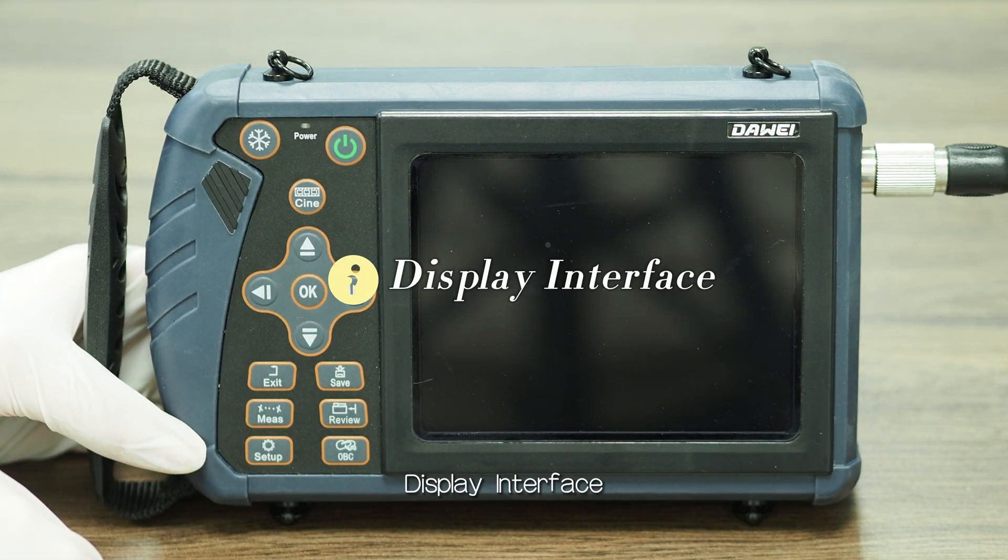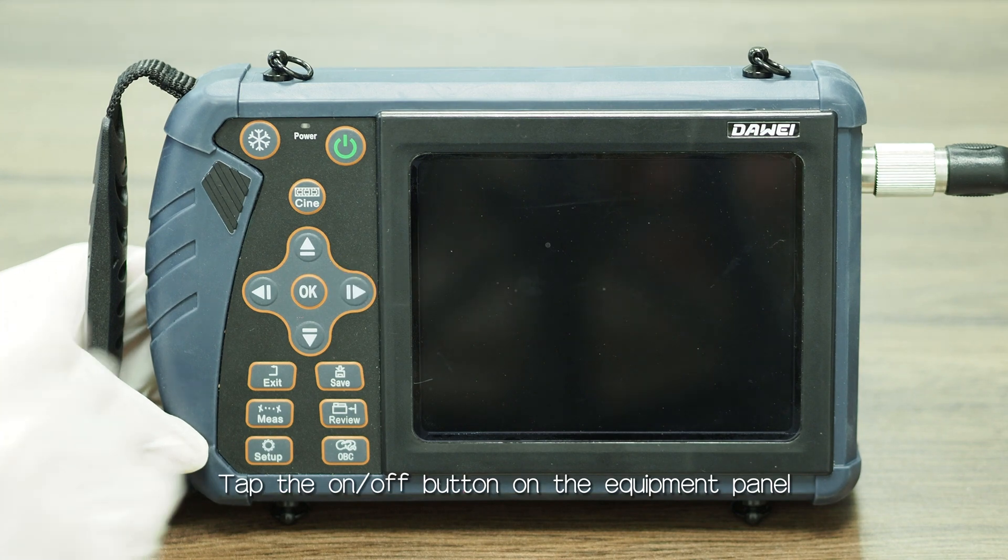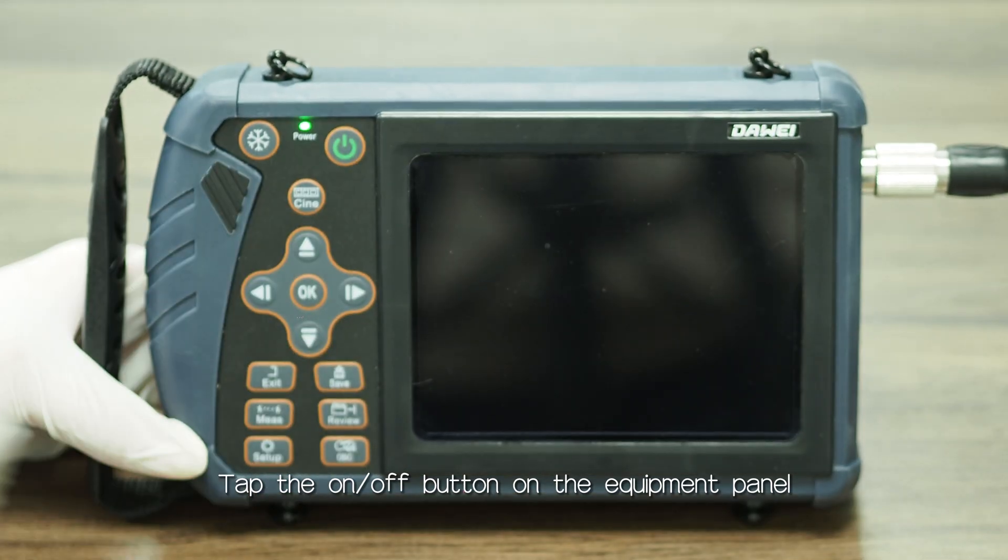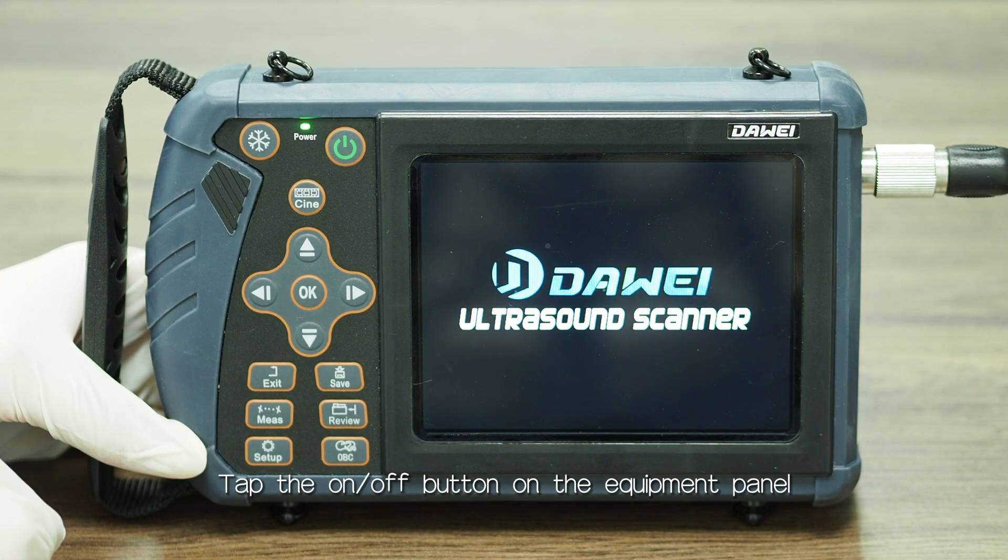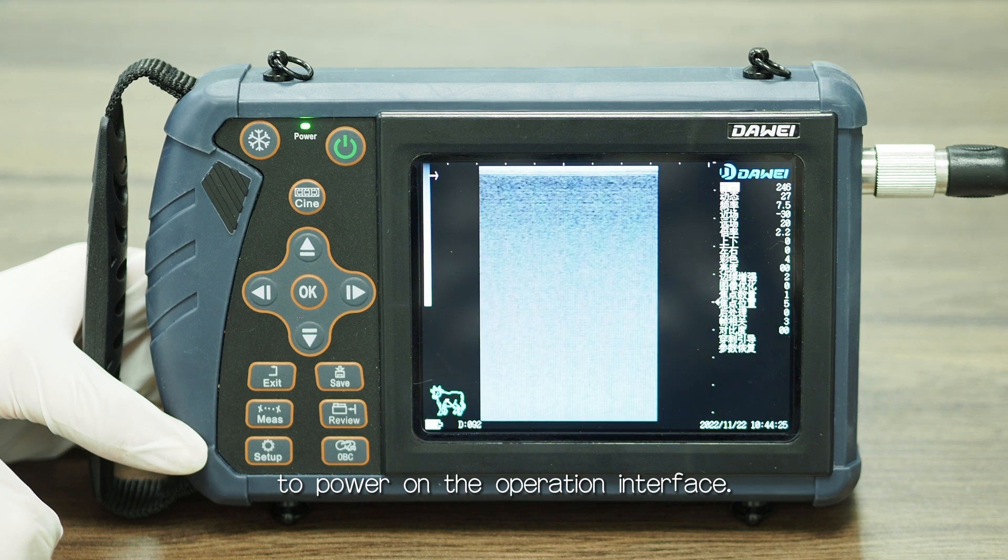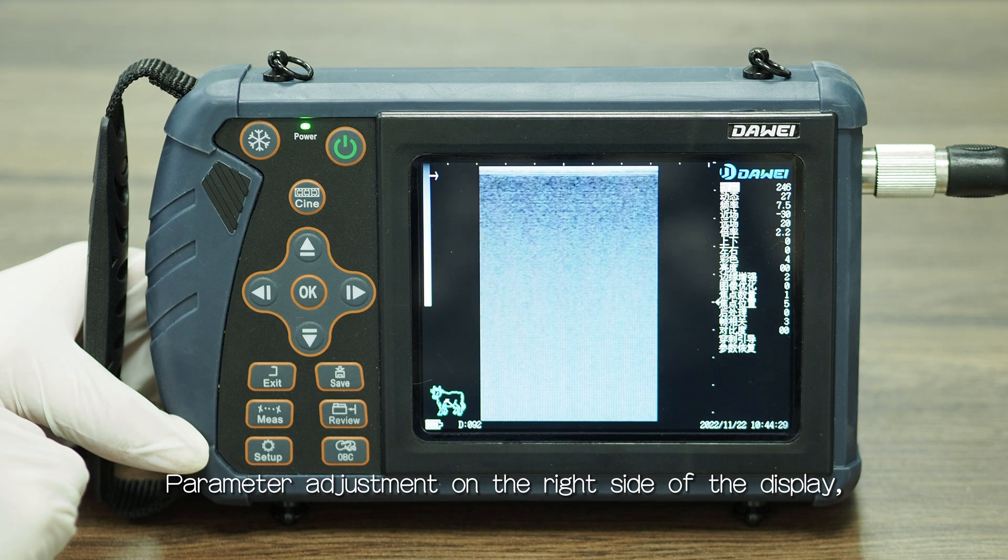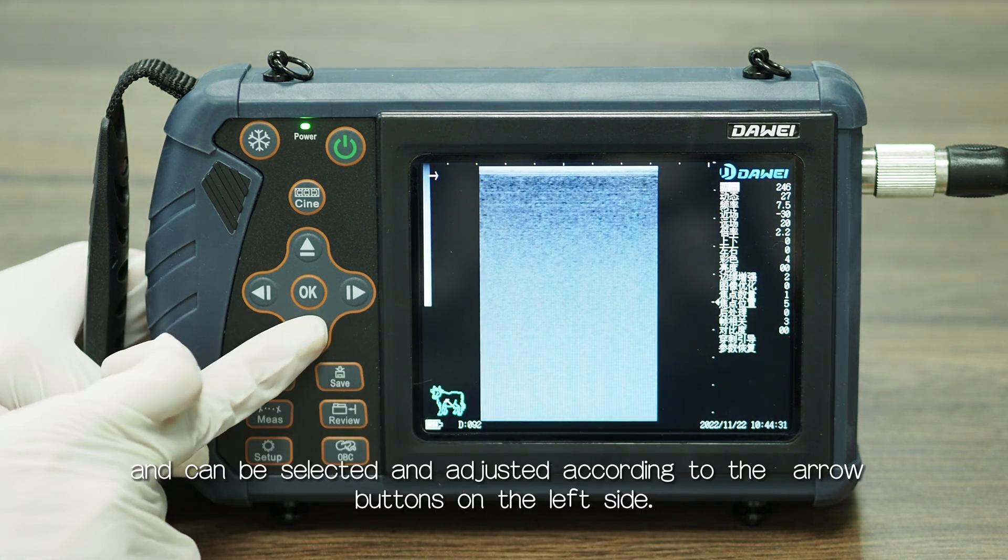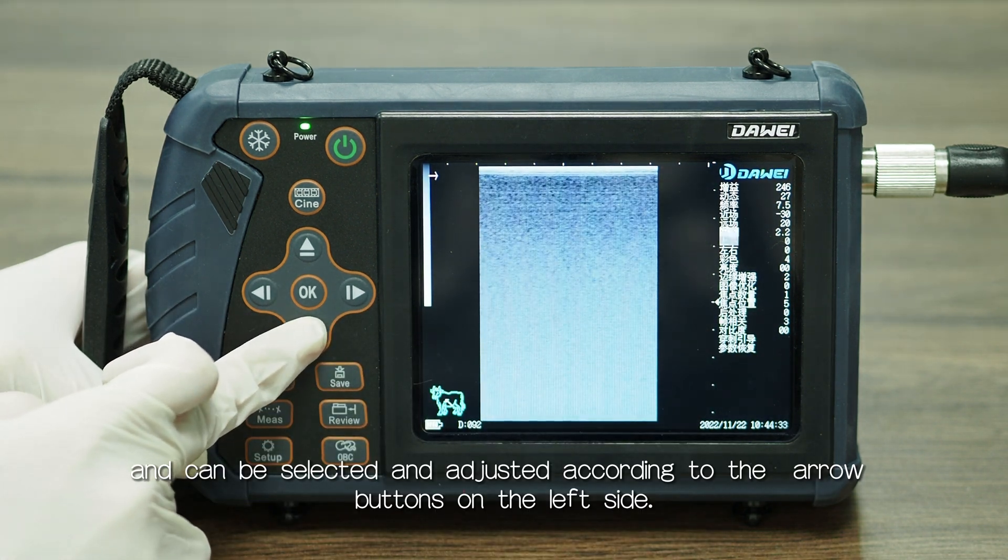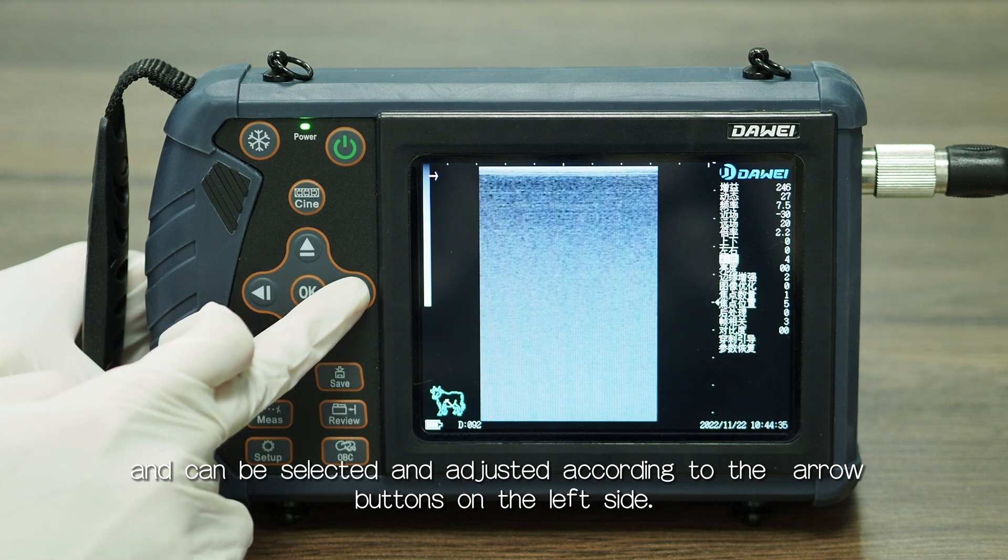Display interface: tap the on/off button on the equipment panel to power on the operation interface. Parameter adjustment on the right side of the display can be selected and adjusted using the arrow buttons on the left side.